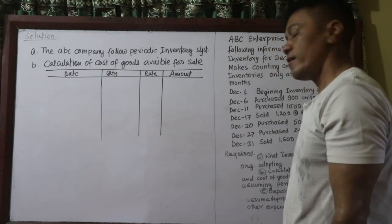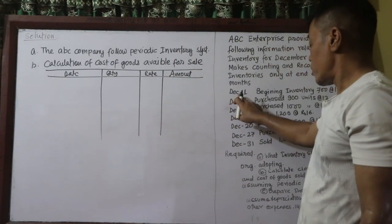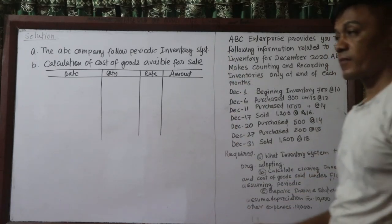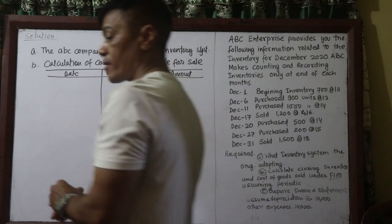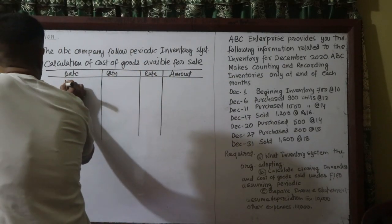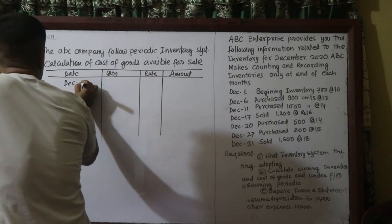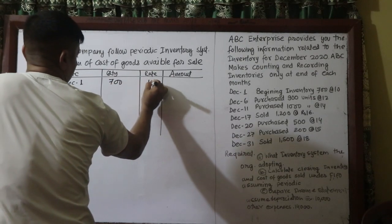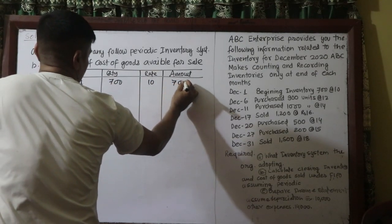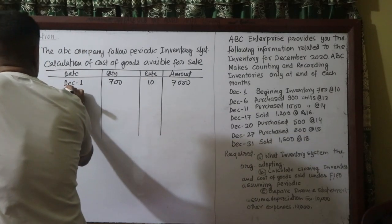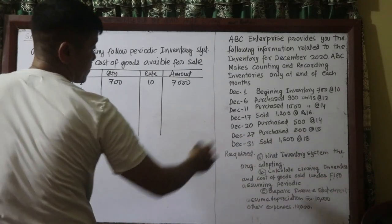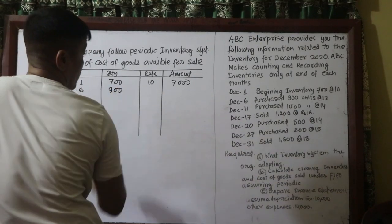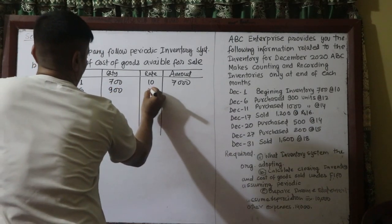The table columns are: quantity, nature, and amount. We are starting from the beginning — December 1, December 7, December 11, and other transaction dates are entered row by row.